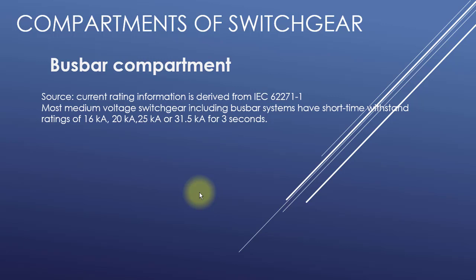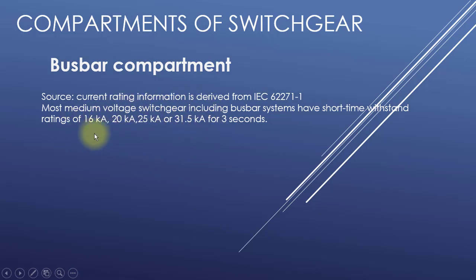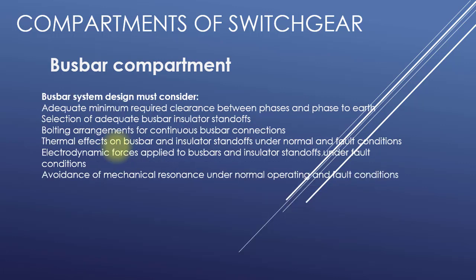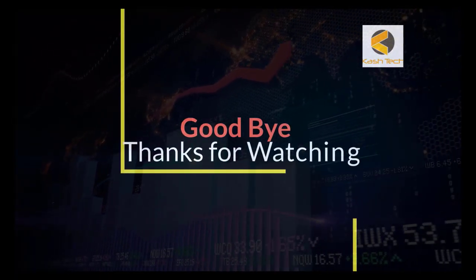The current rating information is derived from IEC 62271-1. Most medium voltage switchgear, including bus bar systems, have short-time withstand ratings of 16, 20, 25, or 31.5 kiloamperes for 3 seconds. The current rating refers to the bar dimensions and is available in different short-time current ratings in kiloamperes. This concludes the introduction about the bus bar compartment. Thank you very much.